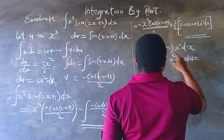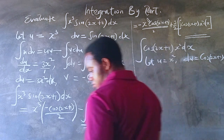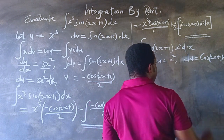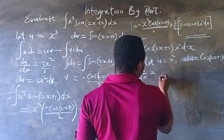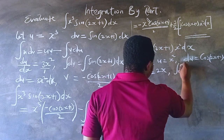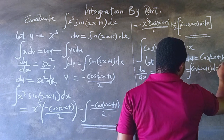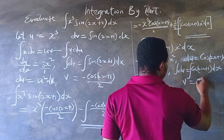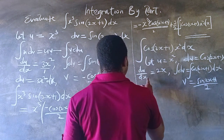This time we let u equal x raised to power 2, and let dv equal cos(2x+1) dx. It can be tricky to choose which component will be u and which will be dv — you may need a little practice. Sometimes you may have to repeat this process several times before you can integrate the whole thing completely. Integrating both sides, v equals sin(2x+1) all over 2 — that is a u-substitution type.